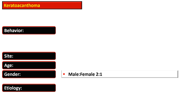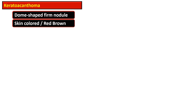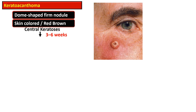Keratoacanthoma is twice as common in males than in females. Regarding morphology, the gross lesion appears as a dome-shaped firm nodule that develops on sun-exposed skin. The nodule is skin-colored or slightly red or brown in color. There is central keratinization, and over three to six weeks it forms a crater-like nodule.